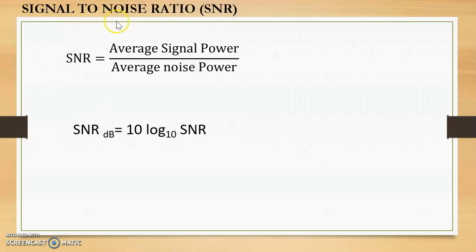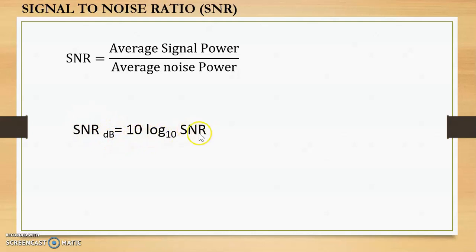To find the bit rate (number of bits sent per second), we need to know the Signal-to-Noise Ratio (SNR), given by: SNR = average signal power / average noise power. SNR is sometimes also expressed in decibels using the formula: SNR_dB = 10 log(SNR) to the base 10.